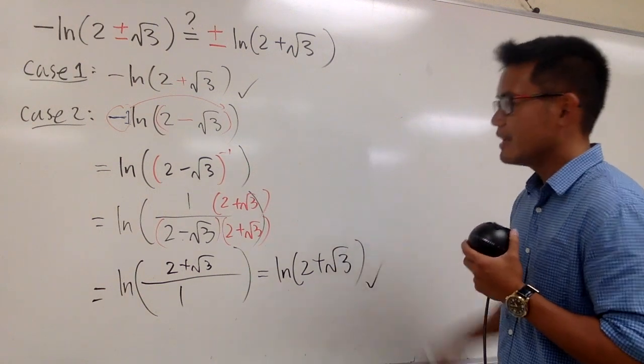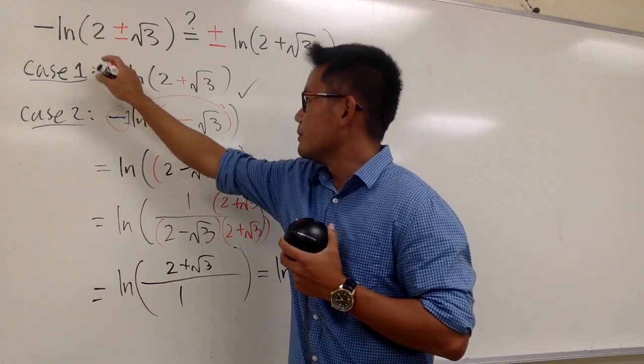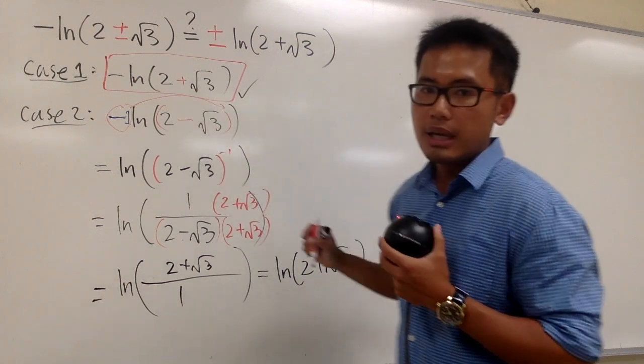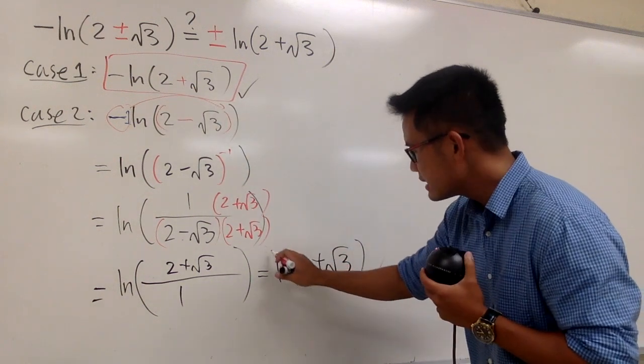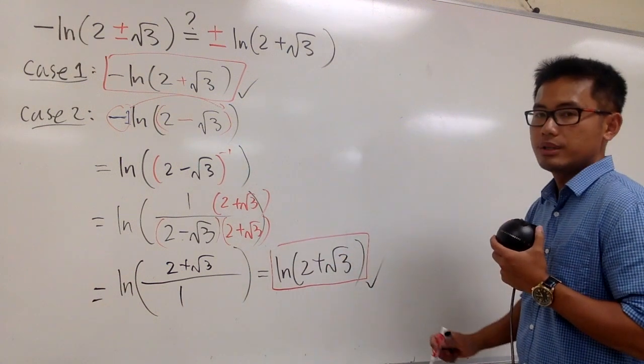That's the second case. So you see, this is the first one that we have. Let me just box this in red. Negative ln 2 plus square root of 3, and then the second one is positive ln of 2 plus square root of 3.